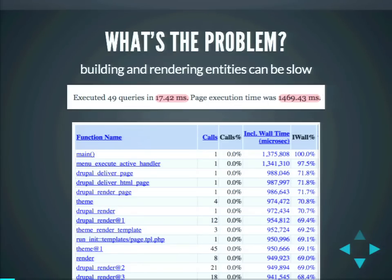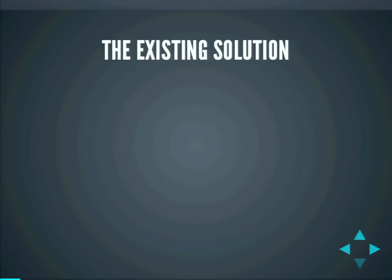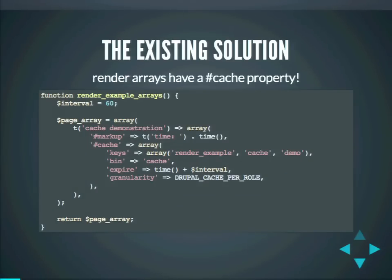There are ways to solve it. There is an existing solution for Drupal 7: render arrays have a cache property. You see something like this — a cache property with keys, a bin, expire, granularity. We have a cache property and we're done, it's solved. Actually, it's not solved. Because if you try this code, what happens is that you see cached content. There's a time call — you will always see the same time for a minute or so. But that won't help you, because right now you are defining your cache property and also defining the heavy-duty markup. It's the process of creating this markup that you want to cache, and you are just doing the same thing — showing cached content but not saving time.